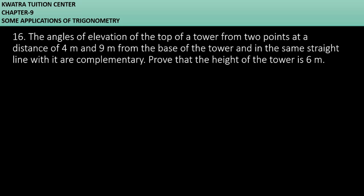Let's start with question number 16. It says the angle of elevation of the top of a tower from two points at a distance of 4 meter and 9 meter from the base of the tower, and in the same straight line with it, are complementary. Prove that the height of the tower is 6 meter. So here we have to prove how to do that.